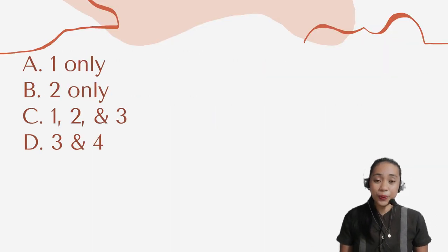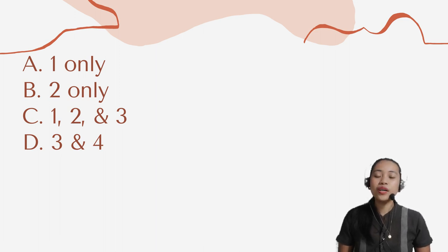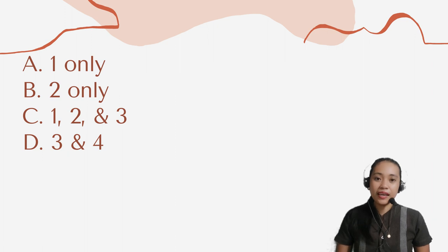The choices are: Letter A: 1 only. B: 2 only. C: 1, 2, and 3. Or D: 3 and 4.